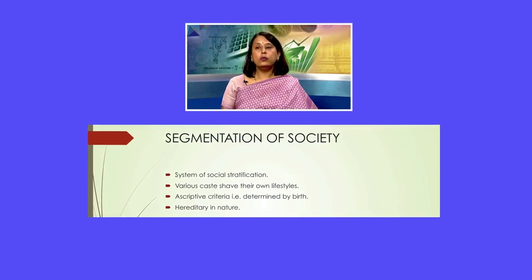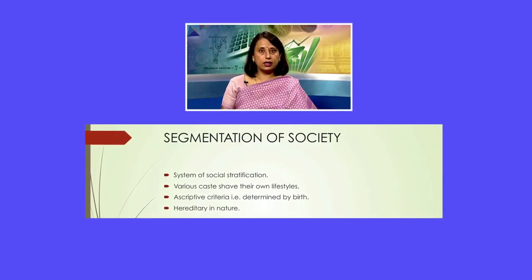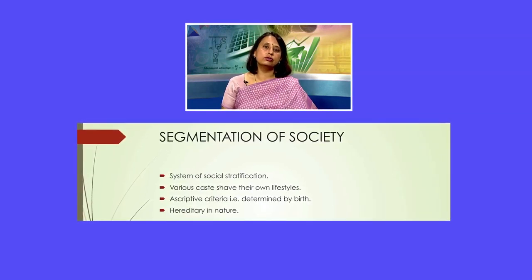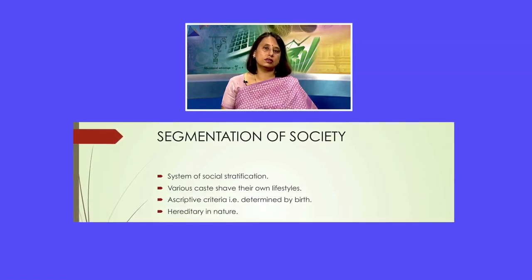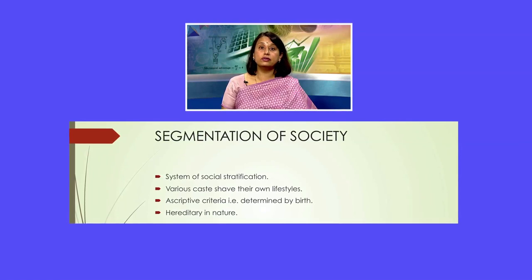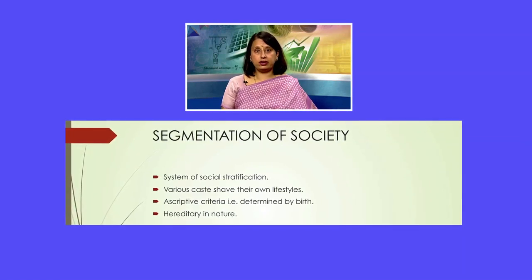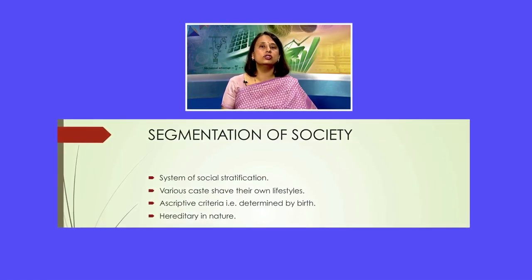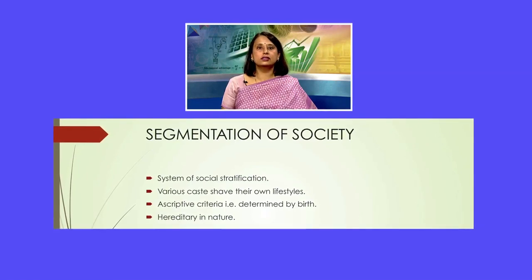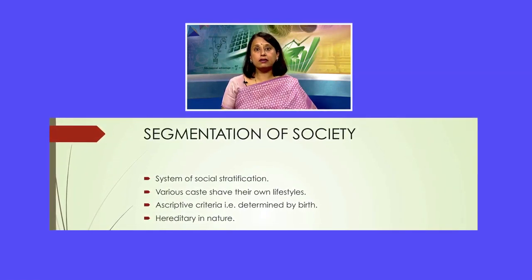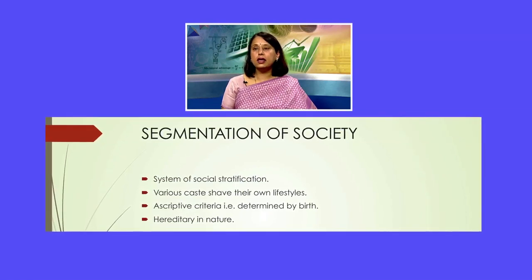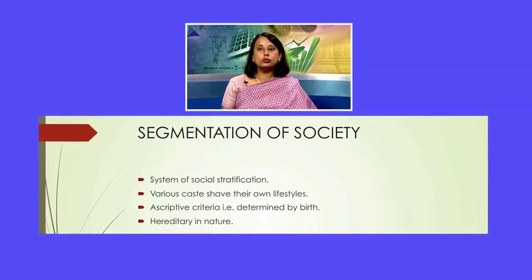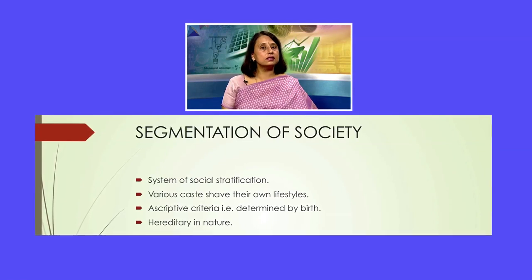When we talk of the segmentation of society, think of an earthworm divided into segments — similarly, society is divided into different caste groups with various varnas and jatis, each with their own lifestyles. In the caste system, ascription is the major criteria: your caste is determined by birth and cannot be changed throughout your life. It is inherited — given to you by birth.